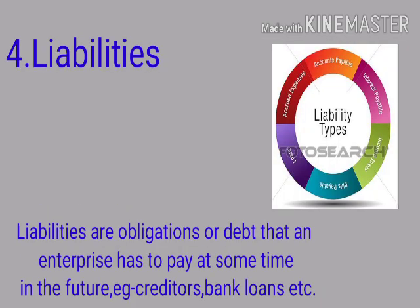The next common term used in accountancy is liabilities. Liabilities means the debts or obligations that the business enterprise has to pay in future. For example, raw material purchased on credit, or a loan taken from a bank or other institutions — these are treated as liabilities.